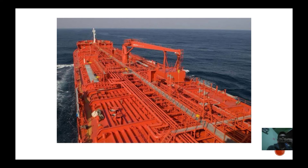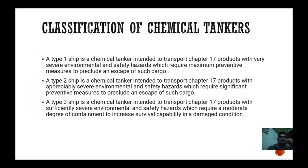Classification of chemical tankers: chemical tankers are classified into three types — Type 1, Type 2, and Type 3. The key point to note is that Type 1 requires maximum preventive measures, Type 2 requires significant preventive measures, and Type 3 requires a moderate degree of containment. Type 1 ships carry the most dangerous cargo among the three, and Type 3 carries the least dangerous cargo.